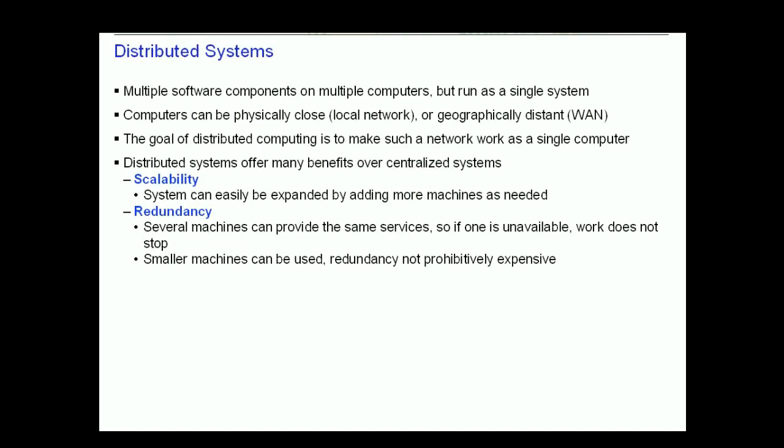A distributed computer system consists of multiple software components that are on multiple computers but run as a single system. The computers in a distributed system can be physically close together and connected by a local network, or they can be geographically distant and connected by a wide area network. The goal of distributed computing is to make such a network work as a single computer.